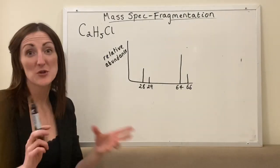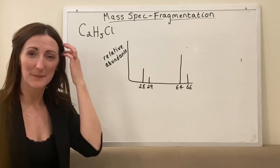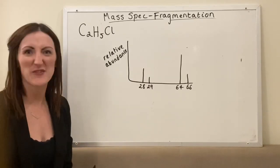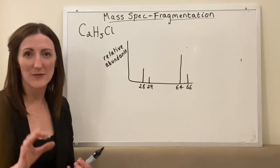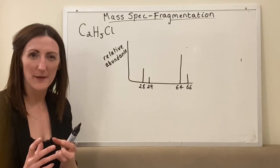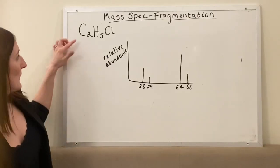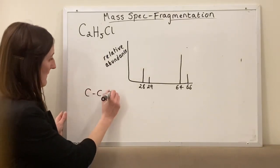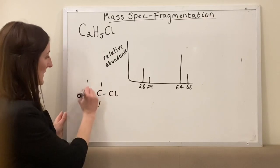This is the last short video on mass spec fragmentation, looking at examples where you have something like chlorine or bromine in your molecule — where you've got these different isotopes within your organic molecule. I've chosen chloroethane as an example, so here's the molecule.